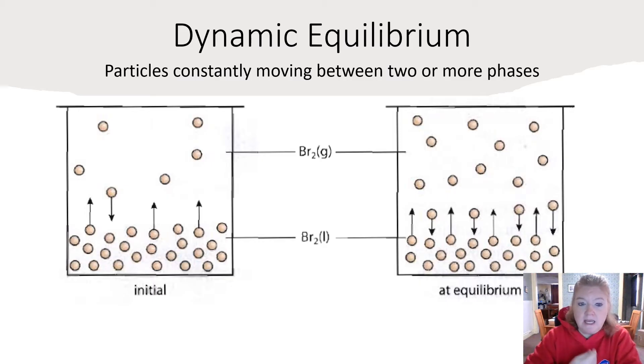Let's look at dynamic equilibrium. We have two phases - gas and liquid. Initially, there is more movement from the liquid to the gas phase, and just one particle going from gas to liquid. At equilibrium, it's in balance. We have an equal number of particles leaving the liquid state going to gas, and an equal number going from gas to liquid. That is equilibrium.